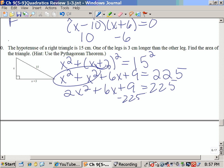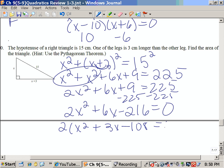Combining the x's gives me 2x squared plus 6x plus 9 is 225. Moving the 225 to the left, I'm going to subtract 9. I have 2x squared plus 6x minus 216 equals 0. Again, I notice they're all divisible by 2. So that's 2 parentheses x squared plus 3x minus 108 equals 0.